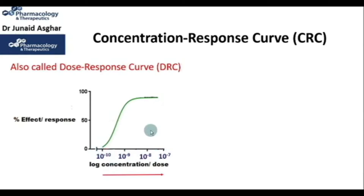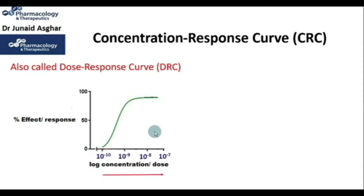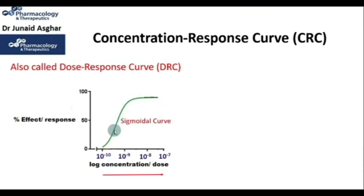When plotting the response at various drug doses, the dose response curve normally takes the form of a sigmoid curve — that is, somewhat shaped like the letter S, as you can see here.